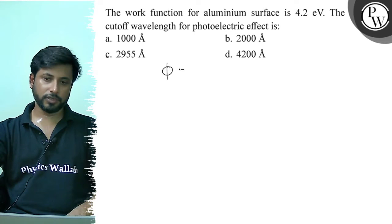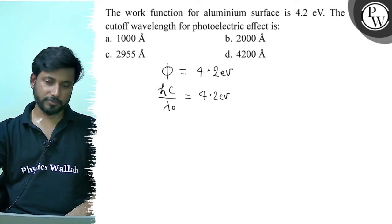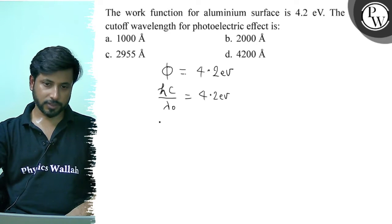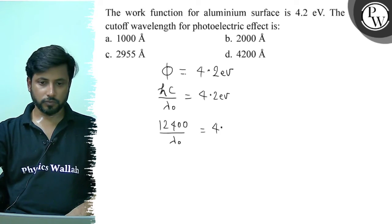Work function is given here, 4.2 electron volt. The cut-off wavelength should be. So, we can write hc upon lambda 0 equals to 4.2 electron volt. Then we can write 12400 divided by lambda 0 equals to 4.2.